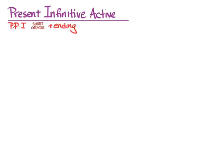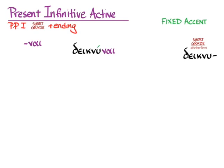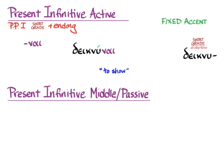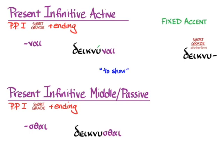The infinitive: just one form with the athematic infinitive active ending -nai on the short-grade stem: deiknunai, with fixed accent on the second-to-last syllable, meaning 'to show.' The present infinitive middle/passive uses the ending -sthai on the short-grade stem: deiknusthai, with accent always on the third-to-last syllable — which can be thought of as recessive. This means either 'to be shown' or 'to cause to be shown.'